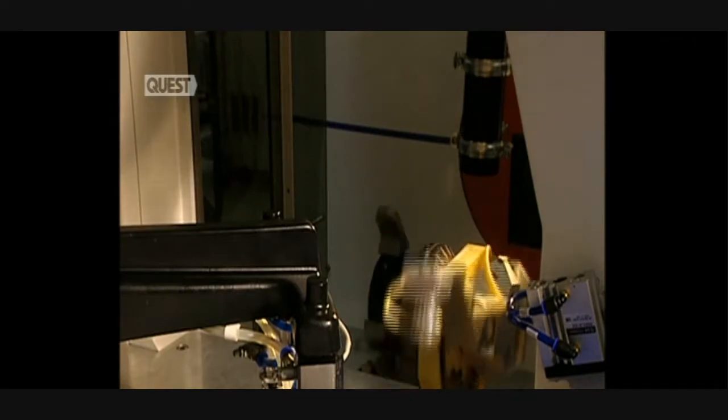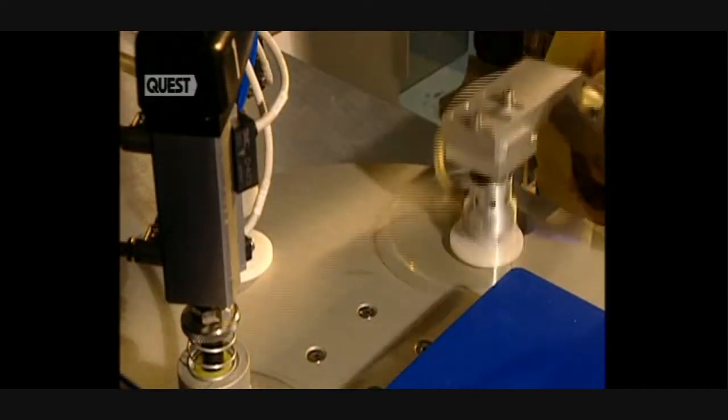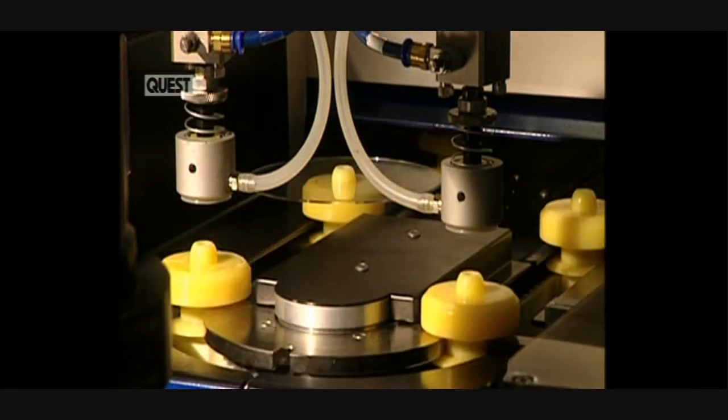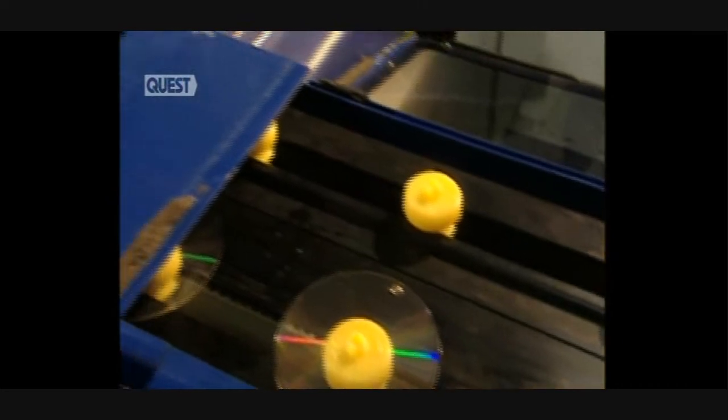The disc is now ready to be metal-coated, so that it can be read by a CD reader. A robotic arm lifts the disc from the mould and places it on supports.